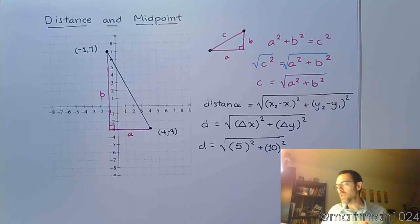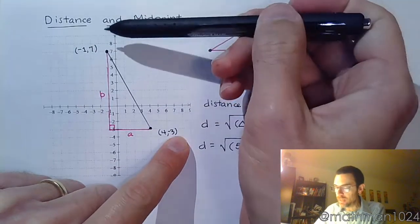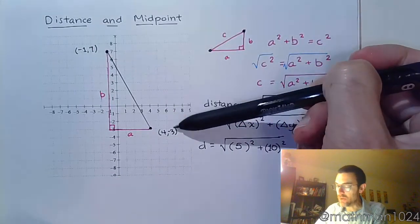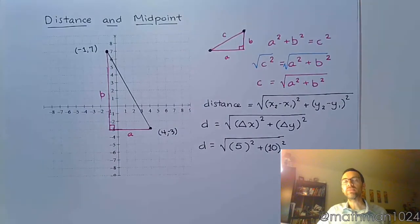Now, you might say, but doesn't the order matter? If I go from negative 3 to 7, that's a gain of 10. If I go from 7 down to negative 3, that's a negative 10. But the reason I'm not caring about the signs here is because I'm going to be squaring, and when you square a positive or a negative, it's going to be positive anyway.